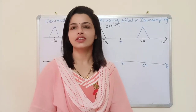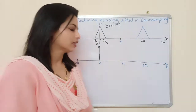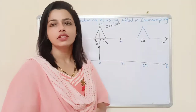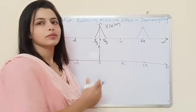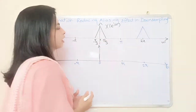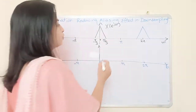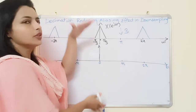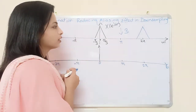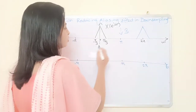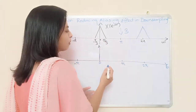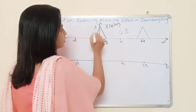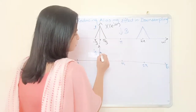In the last lecture we saw down-sampling: we saw that the spectrum of an input signal, having highest frequency pi/3, gets affected when down-sampled by a factor of 3. The signal amplitude gets compressed and the signal is spread by a factor of 3, so pi/3 multiplied by 3 equals pi — this point moves to pi — and the amplitude becomes 1/3.